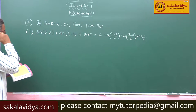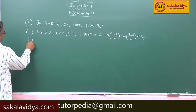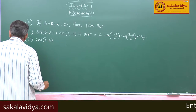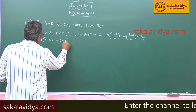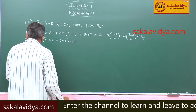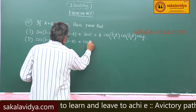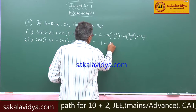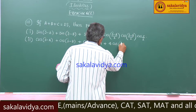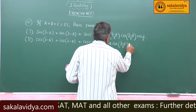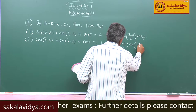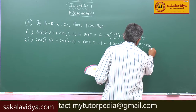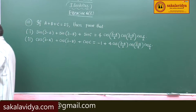Second problem: cos(s minus a) plus cos(s minus b) plus cos(c) is equal to minus 1 plus 4 cos((s minus a)/2) cos((s minus b)/2) cos(c/2).